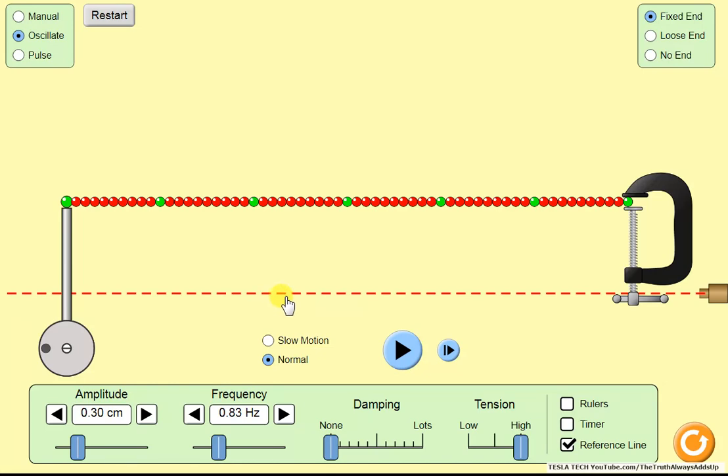We got the calibration set at 1.2 centimeters and we're driving this with 0.3 centimeters and we're going to count how many cycles it takes to get this one wavelength to the calibration line.